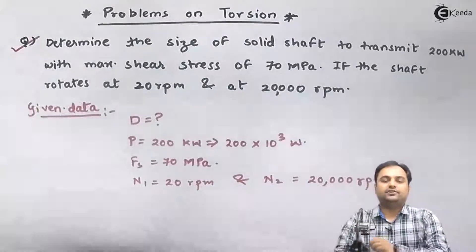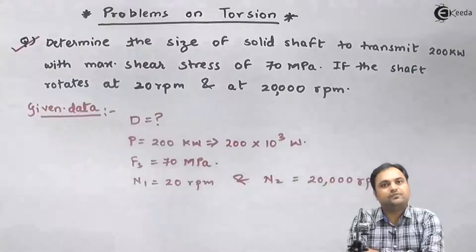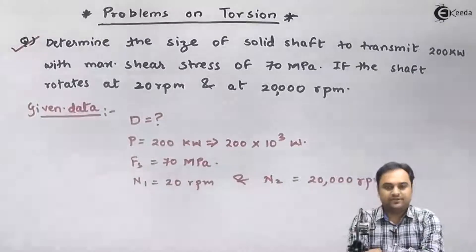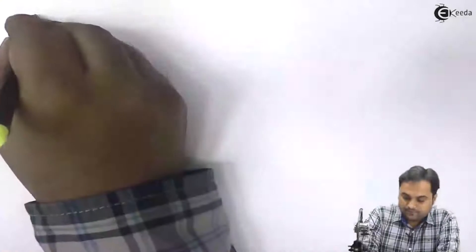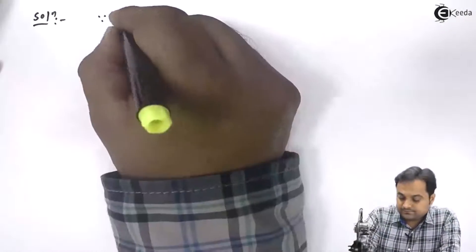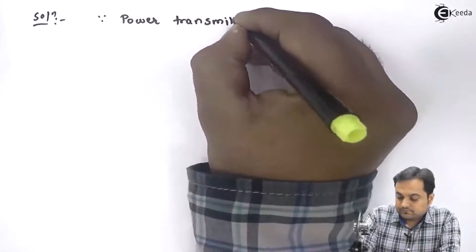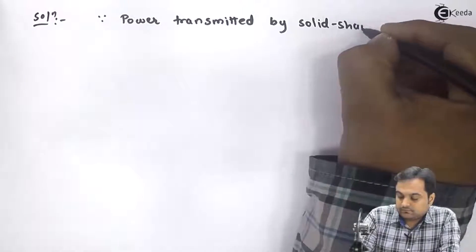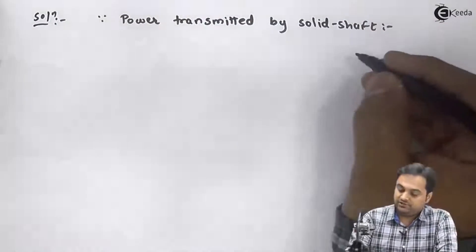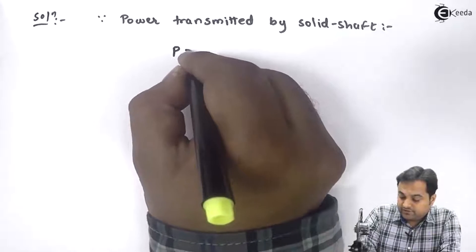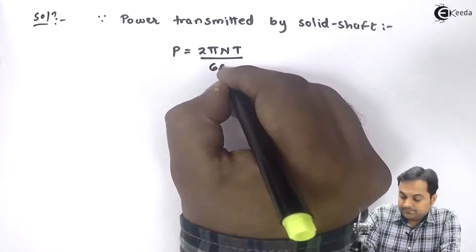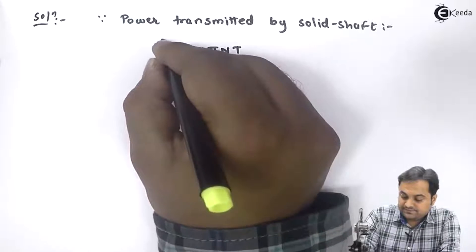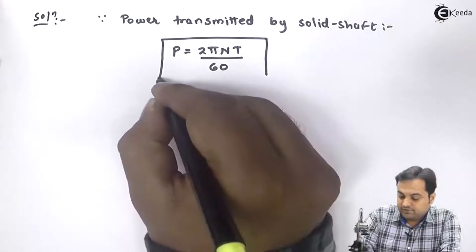Based on this, we will solve the question. Since power is transmitted by a solid shaft, the formula for power is P = 2πNT / 60. I will highlight this formula.